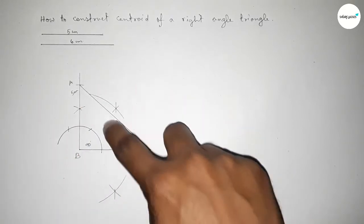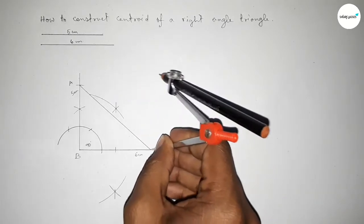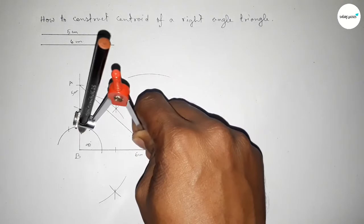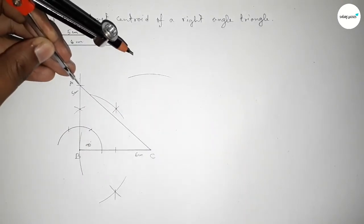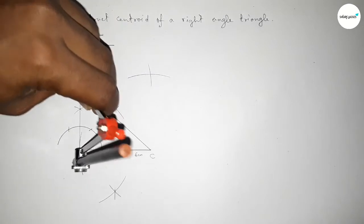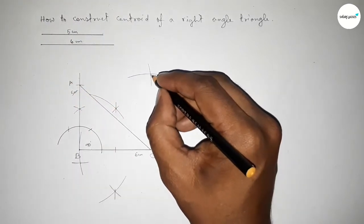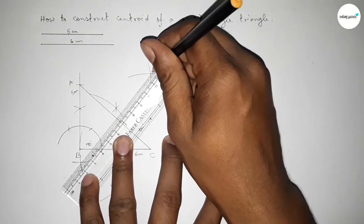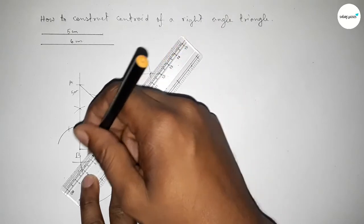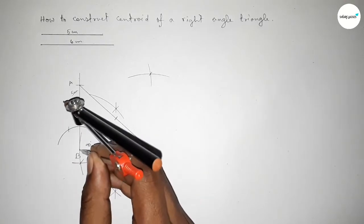Next, bisecting line AC. Putting the compass here and taking greater than half of AC, drawing an arc. With the same length, putting the compass here and cutting arcs on both sides — both curves intersect at two points. Joining this line, which bisects the line AC at a point.